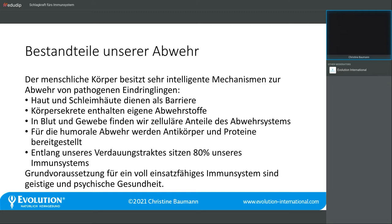Wir haben durchaus Möglichkeiten, diese Abwehrinstanzen zu füttern, zu fördern und zu stärken durch unsere Lebensführung und durch verschiedene Pflanzen. Was wir unbedingt im Kopf haben müssen: entlang unseres Verdauungstraktes sitzen 80 Prozent unserer Immunzellen, beziehungsweise werden dort ausgebildet. Ohne einen gesunden Verdauungstrakt gibt es kein gesundes Immunsystem. Da das Thema den Abend sprengen würde, haben wir das als Extrathema am 20. Mai. Heute schauen wir ein bisschen allgemeiner auf die Abwehr.